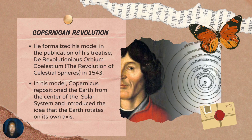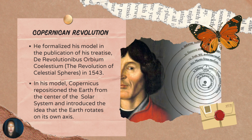He formalized his model in the publication of his treatise, De Revolutionibus Orbium Coelestium, meaning 'the revolution of celestial spheres,' in 1543. In his model, Copernicus repositioned the Earth from the center of the solar system and introduced the idea that the Earth rotates on its own axis. This model illustrated the Earth along with other heavenly bodies to be rotating around the Sun.